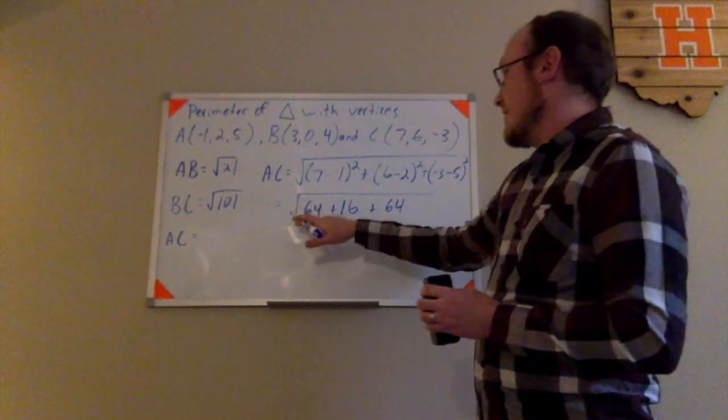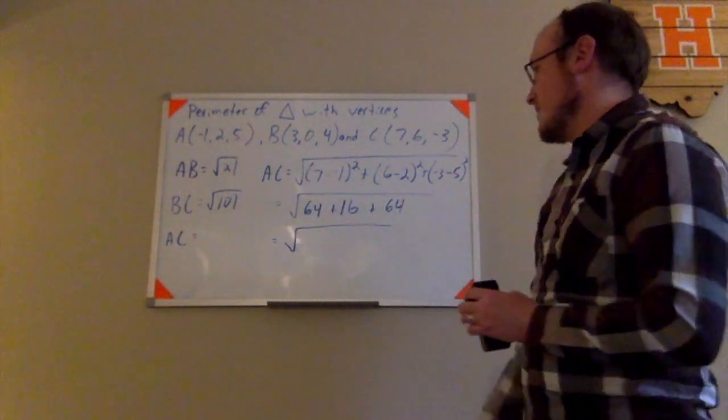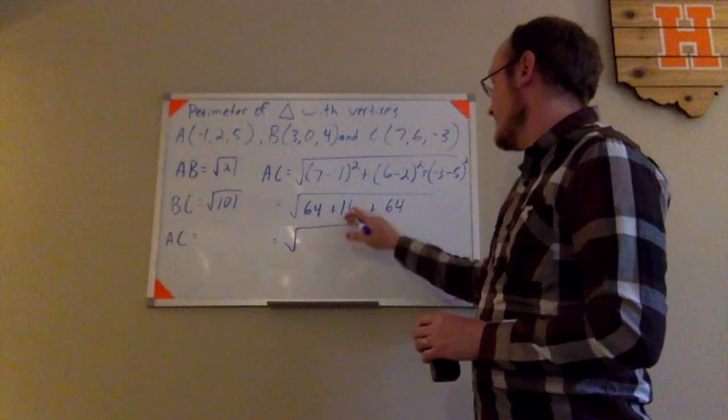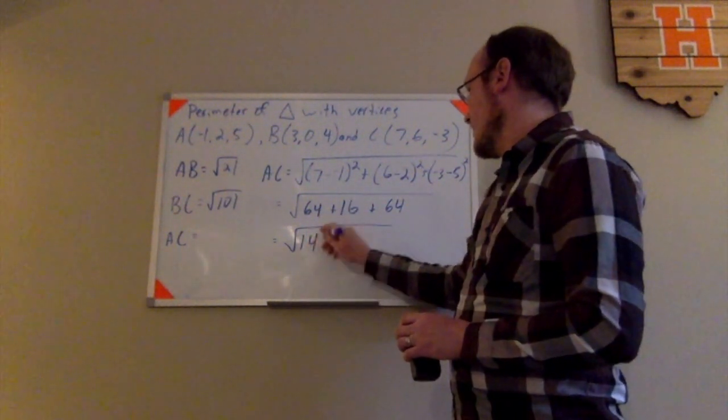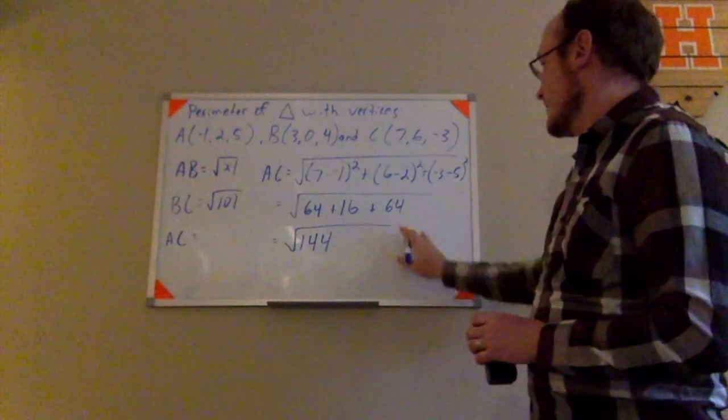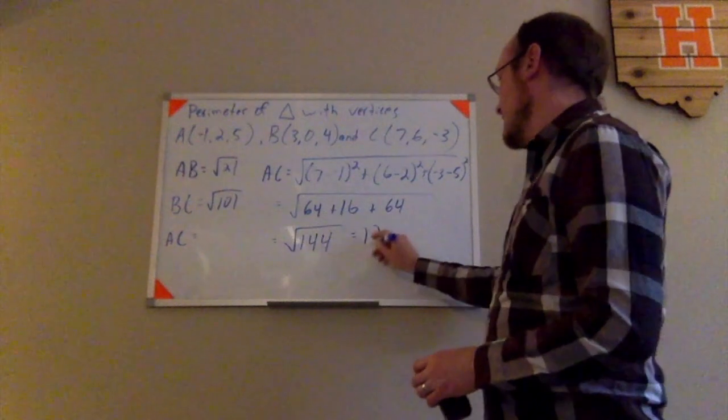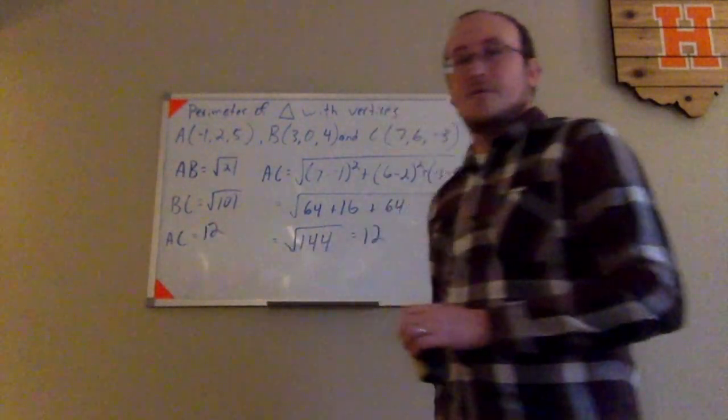So here I have the square root of 64 and 64 makes 128, 10 would be 138, and six more from that would be 144. So the square root of 144 is actually 12. So that one there worked out pretty nice for me. It only came out exact. So I have 12 for that one there.